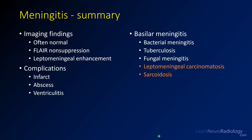In summary on meningitis: imaging findings can often be normal, but the key findings are FLAIR non-suppression and leptomeningeal enhancement. Complications include infarct, abscess, and ventriculitis. Basilar meningitis is a special subset requiring a broader differential including TB, fungus, leptomeningeal carcinomatosis, and sarcoid.